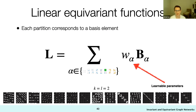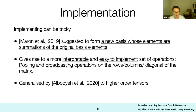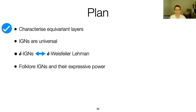The basis of equivariant layers consists of indicator functions over subsets of indices with learnable parameters. We proposed a more interpretable basis whose elements are summations of the original basis elements, giving rise to simple operations like summing over rows and broadcasting to columns. This thinking was generalized by a later paper by Albouy, showing how pooling and broadcasting generalize to higher-order tensors.